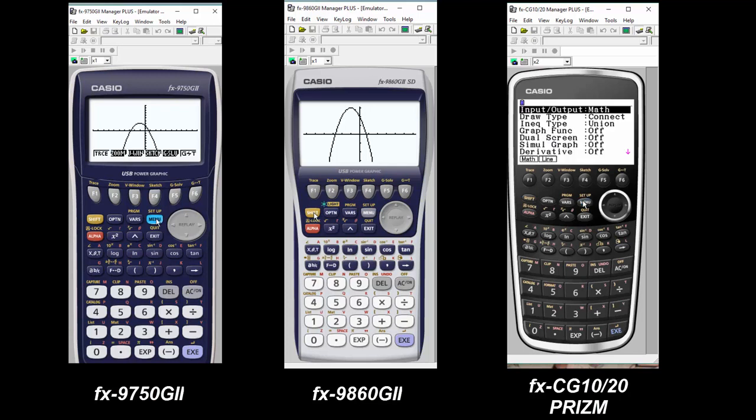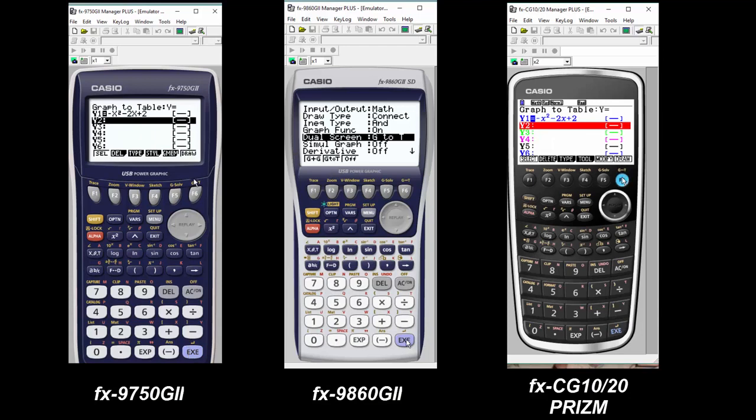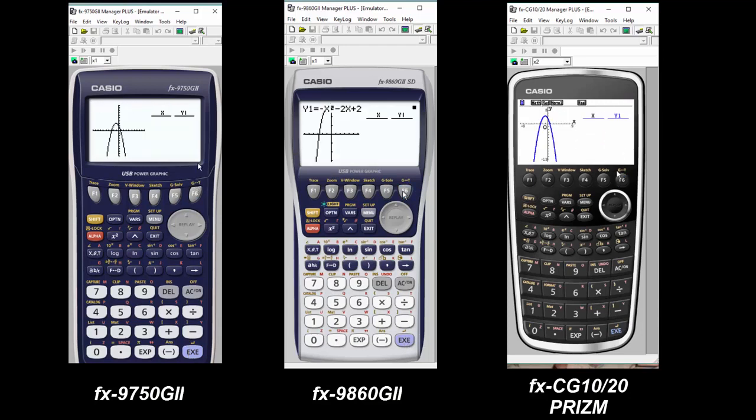So now we want to see a table, so to do that while you're in graph you're going to hit shift menu and scroll down until you get to dual screen and turn it on to GT, which means graph to table. It'll take you back to that screen, and then when you hit execute, or draw again, what you get is a table.